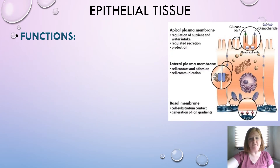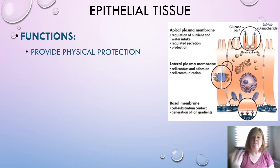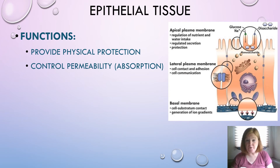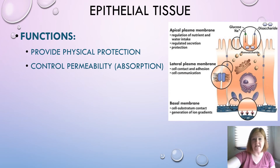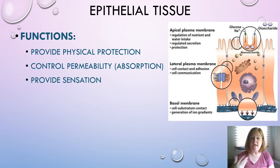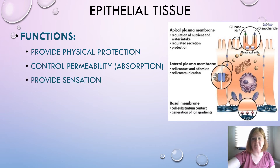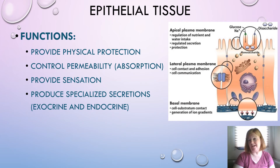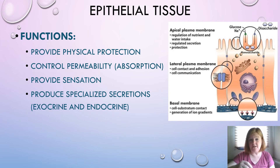The functions of epithelial tissue: it provides physical protection, whether internal or external; it controls permeability and absorption — what gets in and out; it provides sensation through nerve endings; and it produces specialized secretions — endocrine, released inside the body, and exocrine, secreted outward.